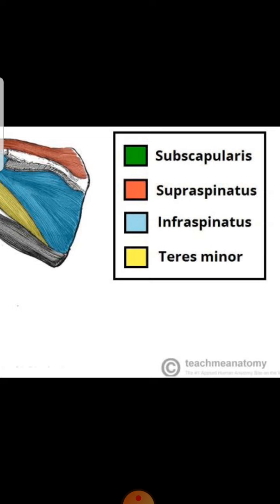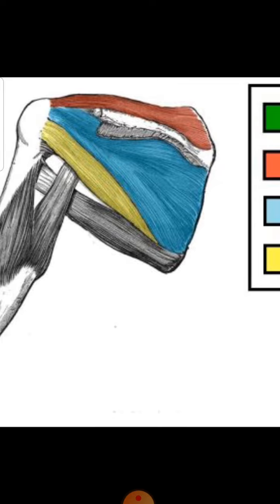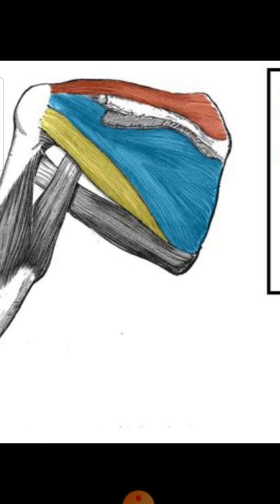The next muscle is the infraspinatus, highlighted in blue in this image. It is located on the large posterior part of the infraspinous fossa of the scapula. Its insertion is onto the greater tubercle of the humerus, just like the teres minor muscle. The function of this muscle is to laterally rotate the arm and, as part of the rotator cuff, it also stabilizes the shoulder joint.